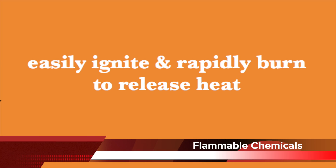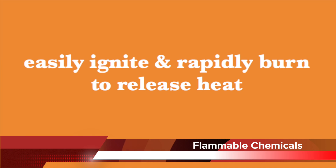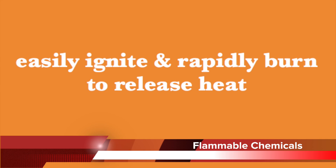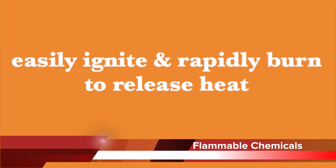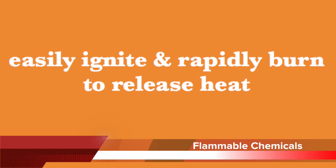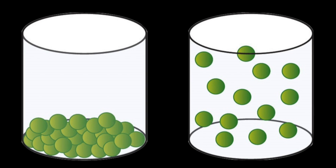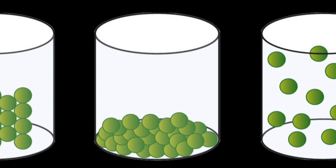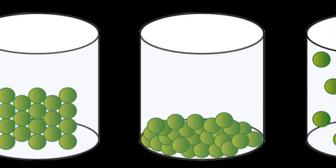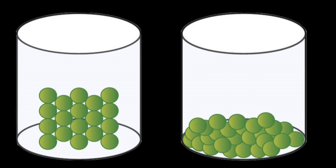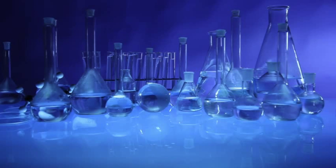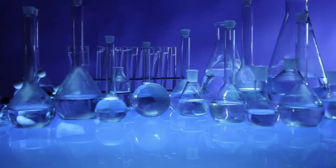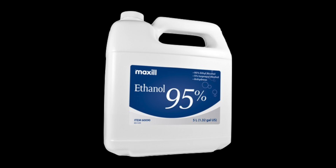Flammable chemicals are chemicals that easily ignite and rapidly burn, releasing large amounts of energy, mostly in the form of heat. Flammable chemicals come in all forms, such as gases, liquids, and even solids. Common flammable laboratory solvents include acetone,